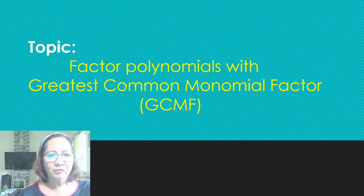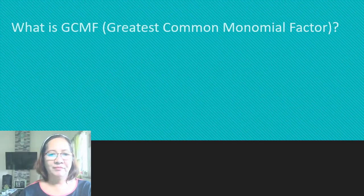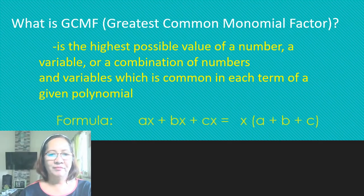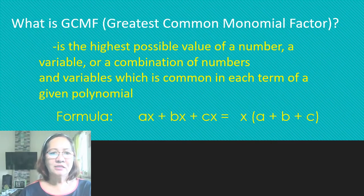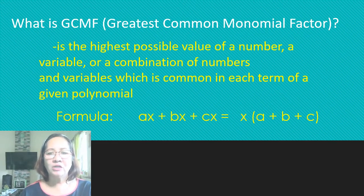The topic is about factoring polynomials with the Greatest Common Monomial Factor, or GCMF. The Greatest Common Monomial Factor is the highest possible value of a number, a variable, or a combination of numbers and variables, which is common in each term of the polynomial.